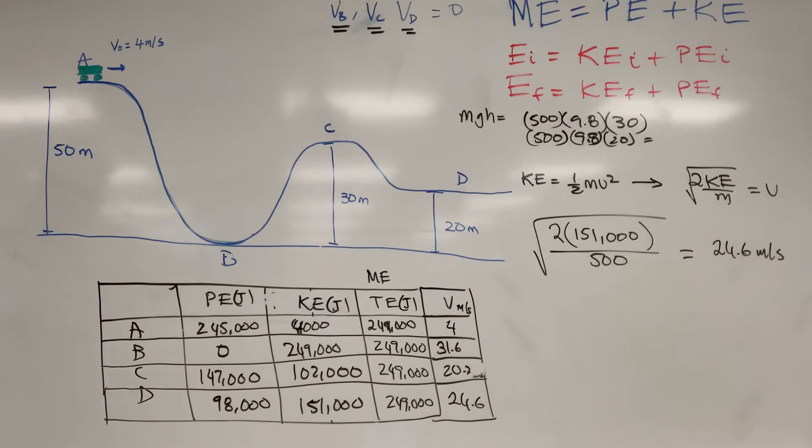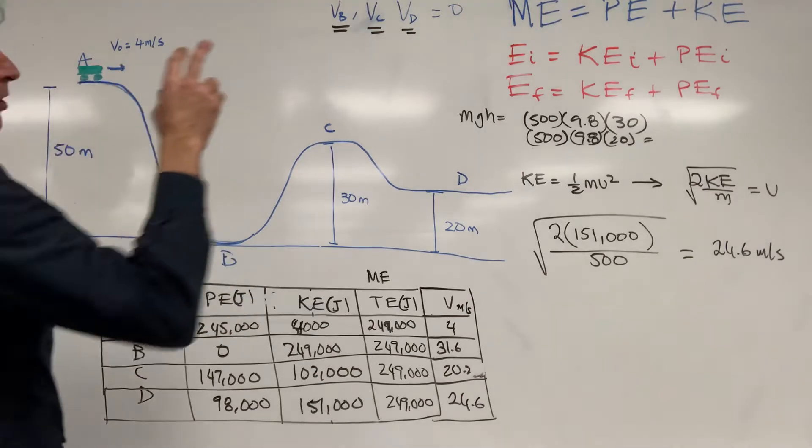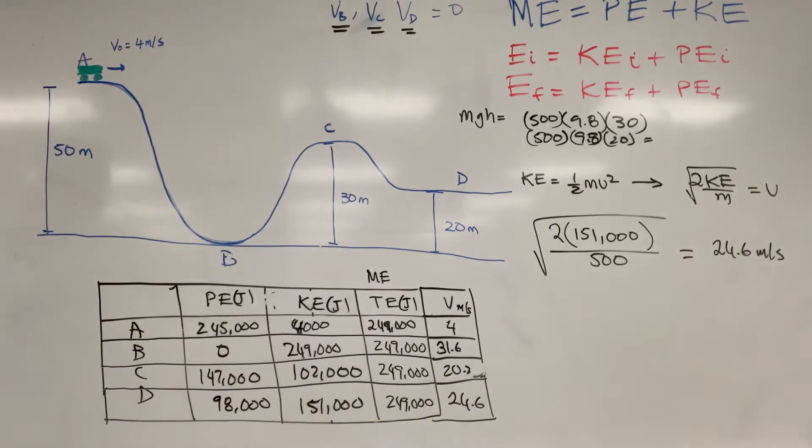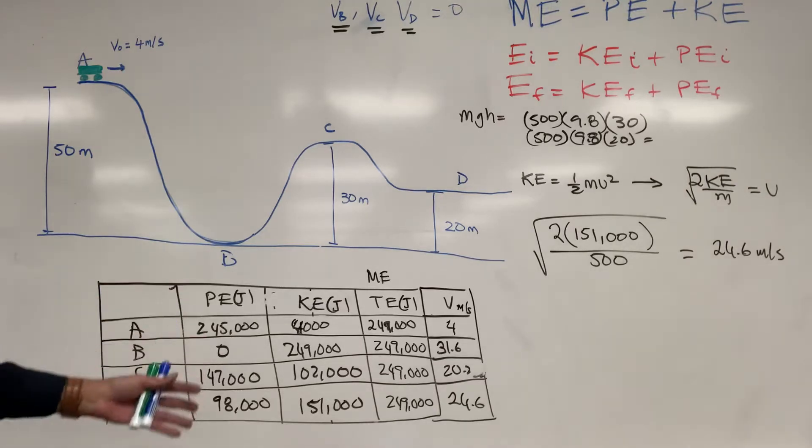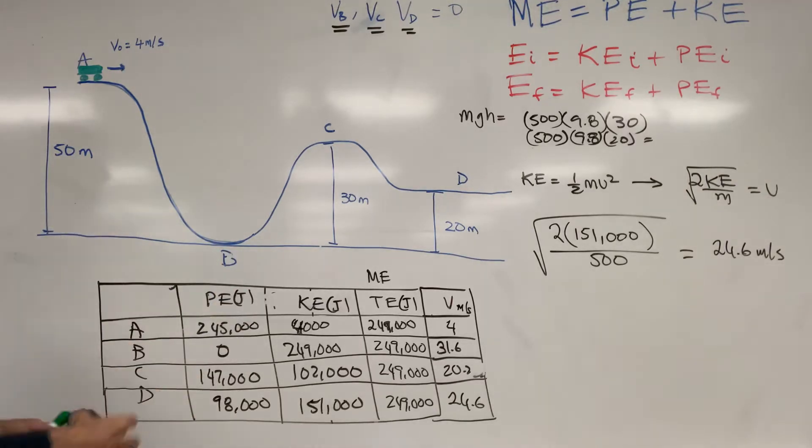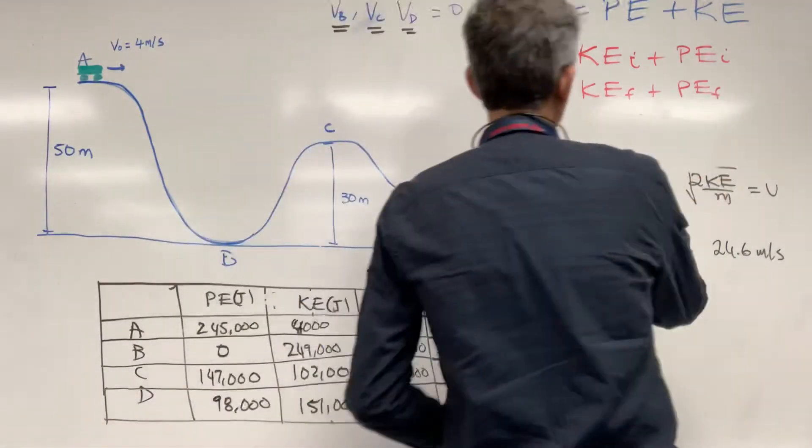But if the question was not asking you for energies, and it was asking you for just the velocities, then your energy values would be wrong, but your velocity values won't. And the reason is mass doesn't matter in these equations. We can take it off.